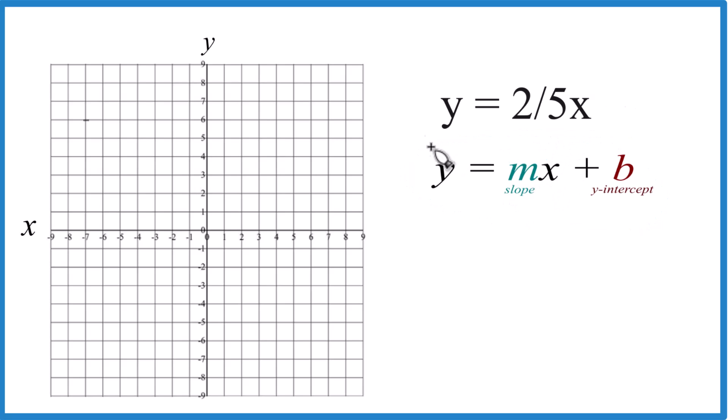You could use a table of values and you get the same answer. So when you look at this, you have y equals two-fifths x, but there's no b. So you could just write in plus zero for b.